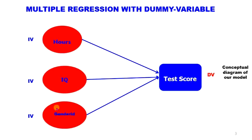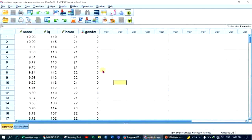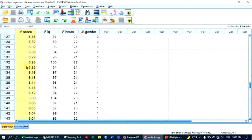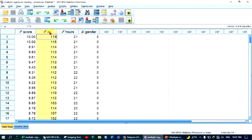If you have a student test score, you can see the effect of the independent variables. You can use the IQ, the hours of study, and the gender data as your independent variables to predict the test score.